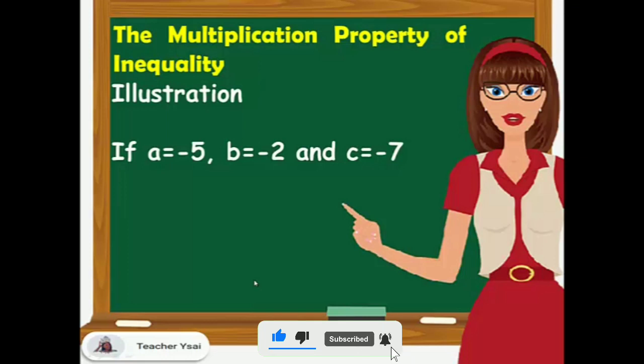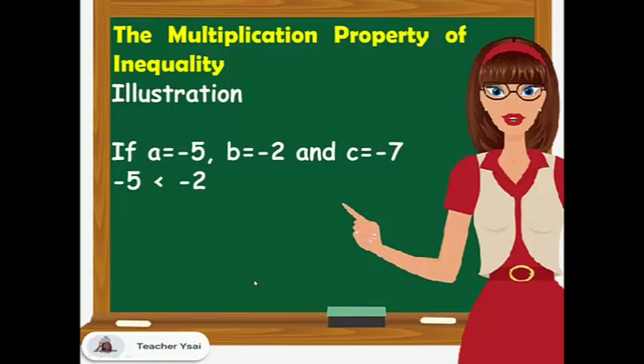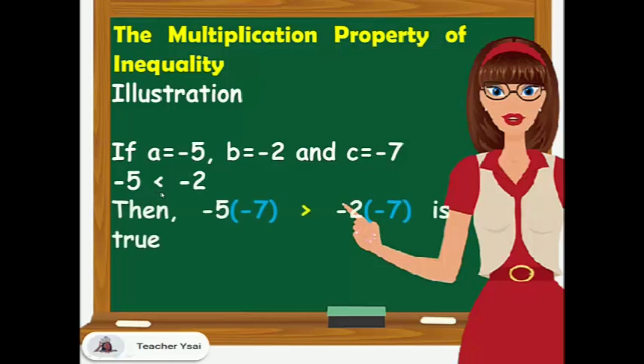Another example: if A equals negative 5, B equals negative 2, and C equals negative 7, we know that negative 5 is lesser than negative 2. Then if we multiply negative 7 to both sides of the inequality.